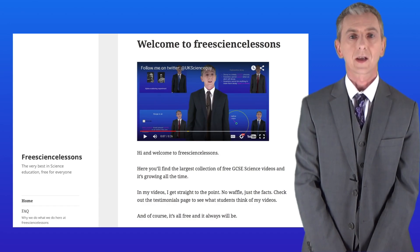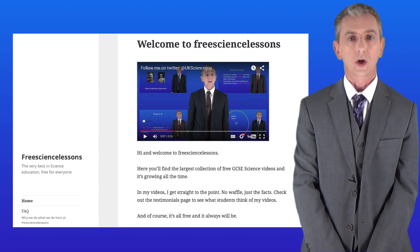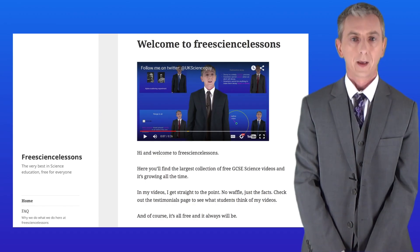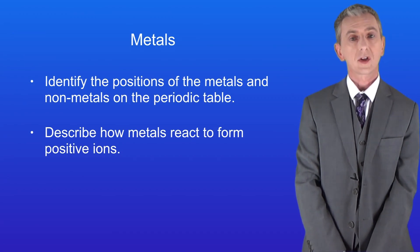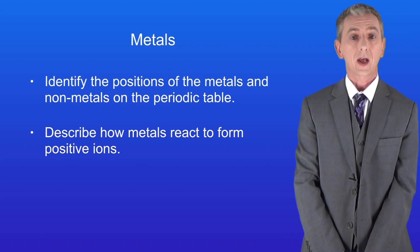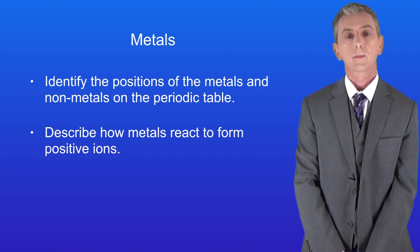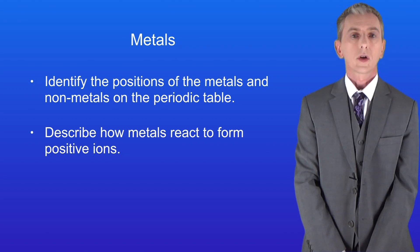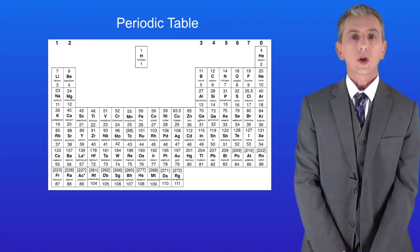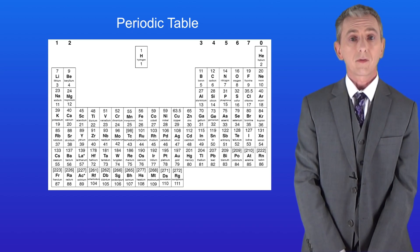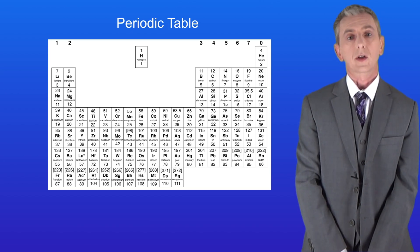Hi and welcome back to freesciencelessons.co.uk. By the end of this video you should be able to identify the positions of the metals and the non-metals on the periodic table. You should then be able to describe how metals react to form positive ions. I'm showing you a copy of the periodic table here and don't forget you're given a copy of this in your exam.